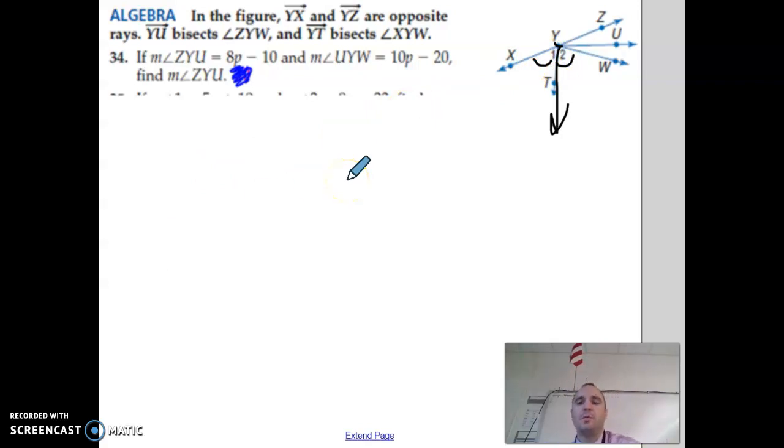The way they try to throw a little curveball, the harder ones as they build up the problems, is they'll say something like this side is 2X. And this whole angle over here is 100,